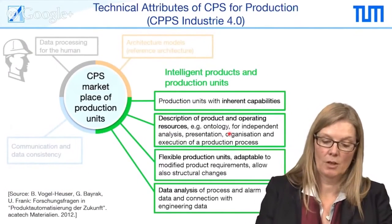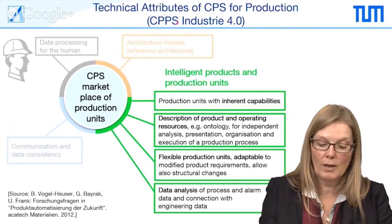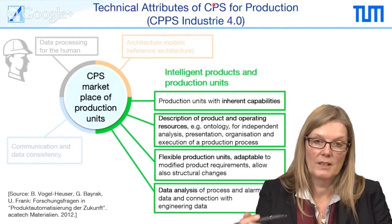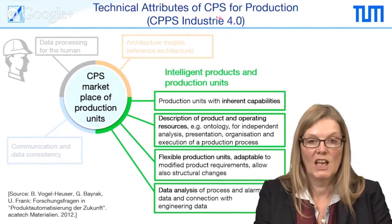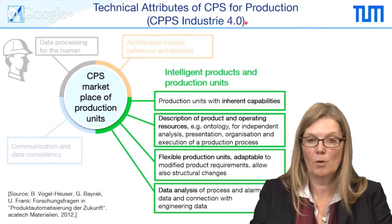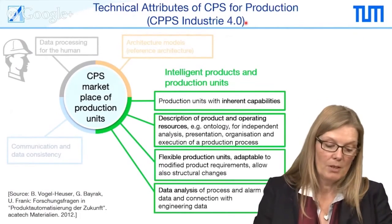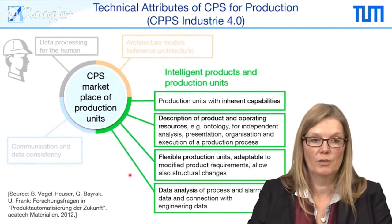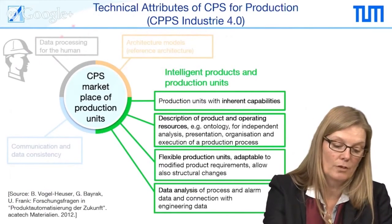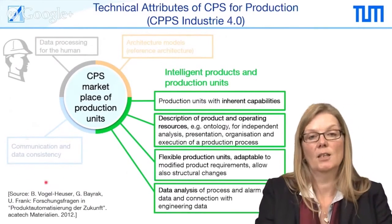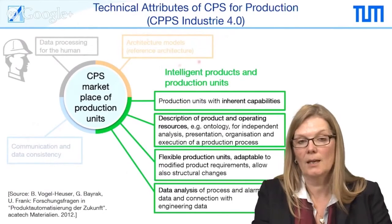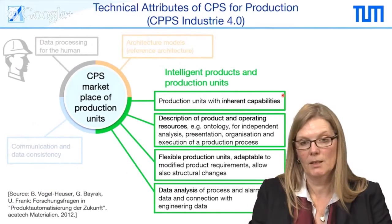How does this fit into the context of cyber-physical production systems or Industrie 4.0? From our point of view, agents are an essential part of such cyber-physical systems to make them more intelligent and more adaptable. In Germany, we have four subsections categorizing Industrie 4.0: data processing for the human, communication and data consistency, and architecture, models and reference architectures where companies and scientists work together.